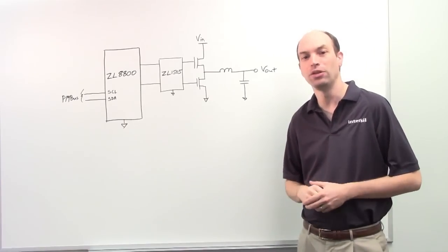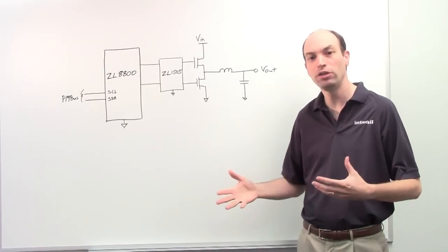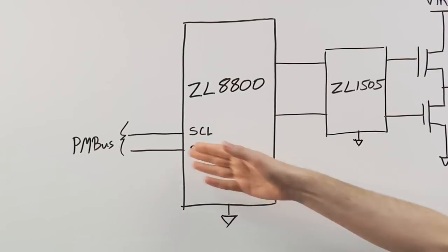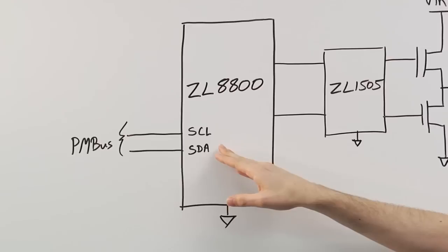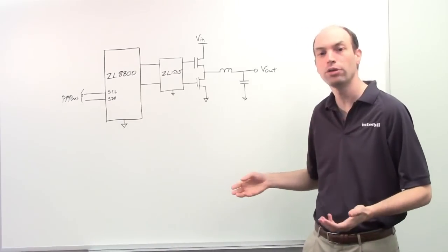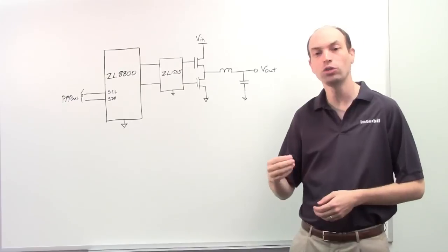One of the main benefits of the product is the ability to have a PMBUS interface, which is essentially a two-wire SMBUS or I2C interface, such that you can configure the device and then you also have telemetry.